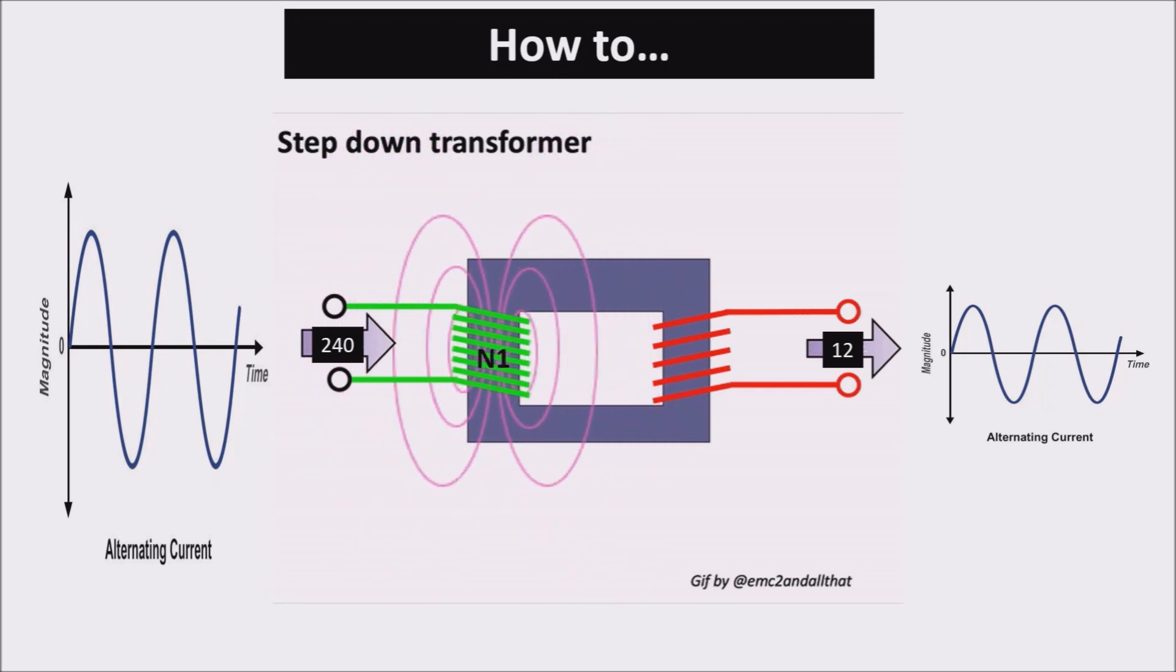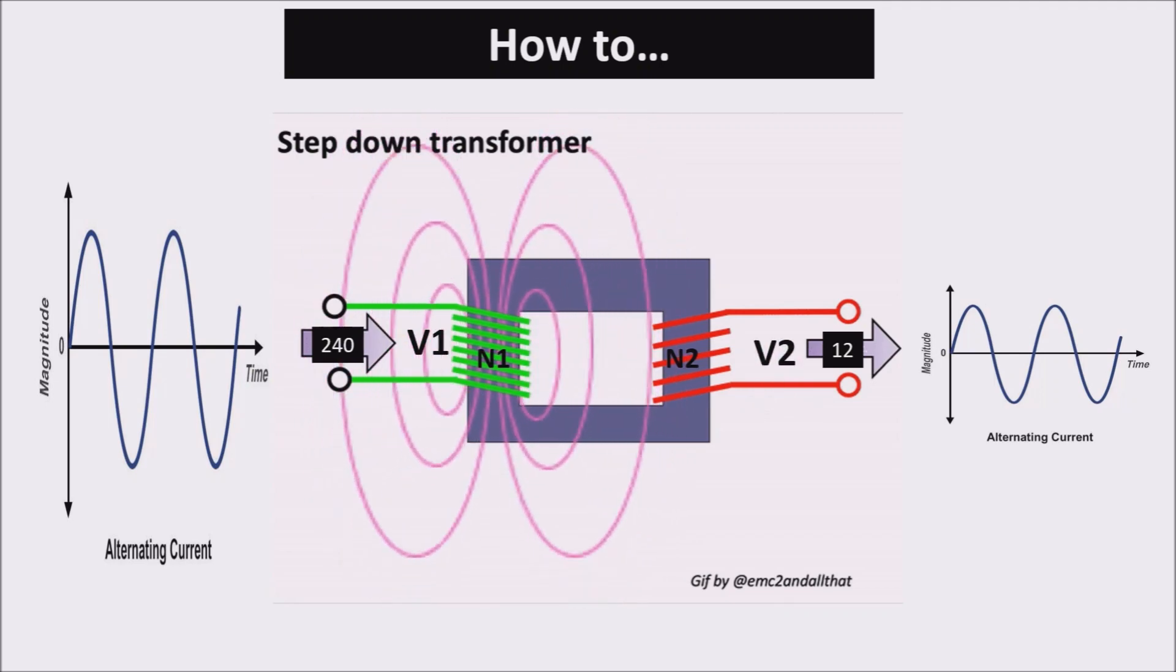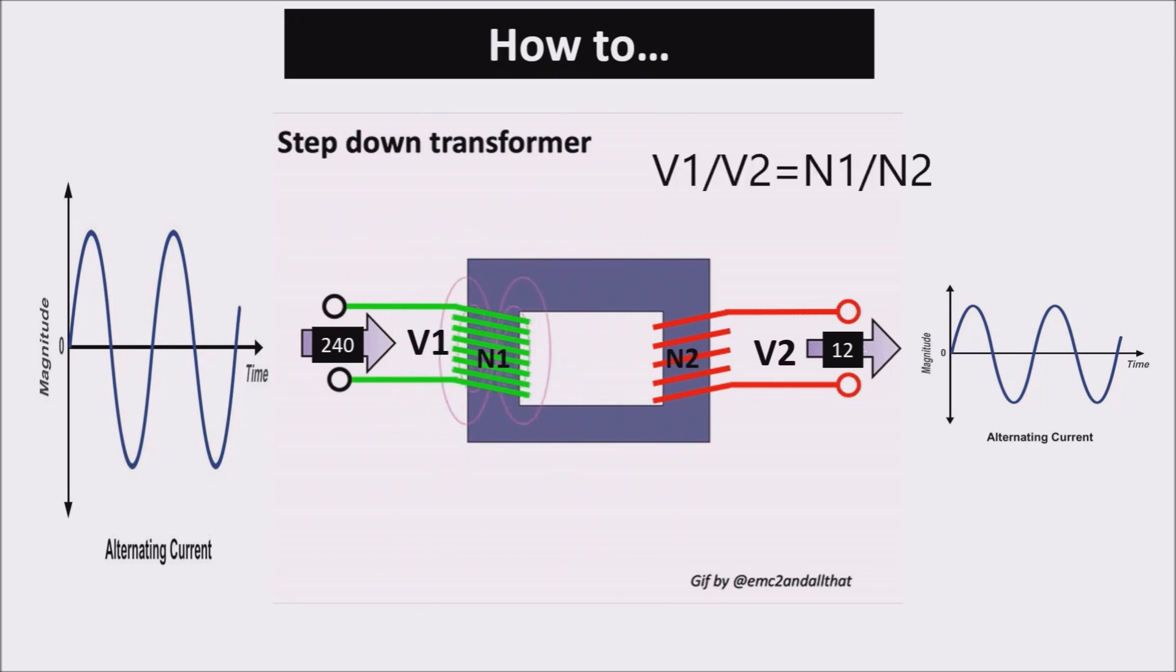If N1 is the turn number of the first coil and N2 is the turn number of the second coil, and if V1 is our applied voltage and V2 is our transformed voltage, the basic transformer relation states that V1/V2 is equal to N1/N2.